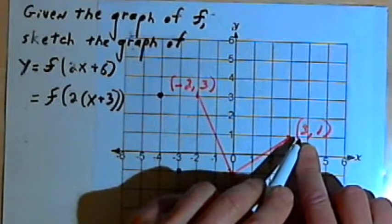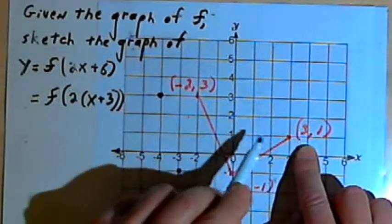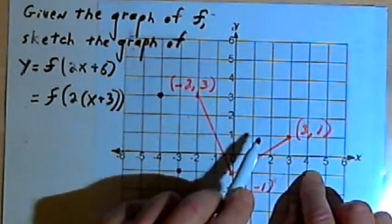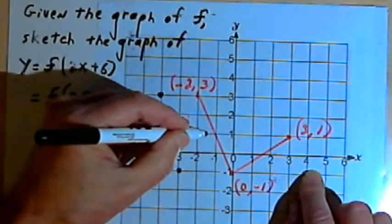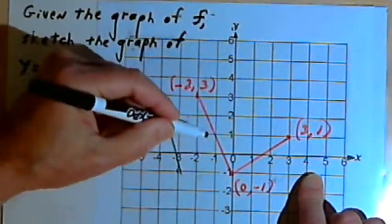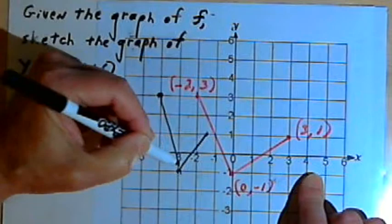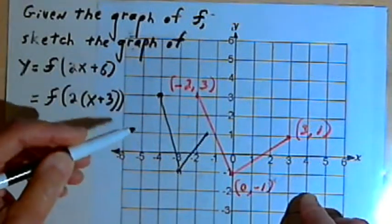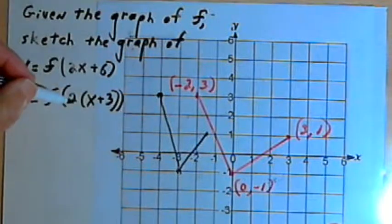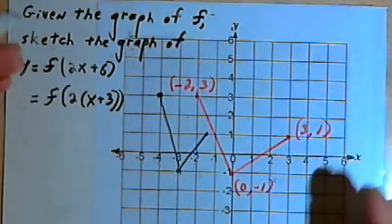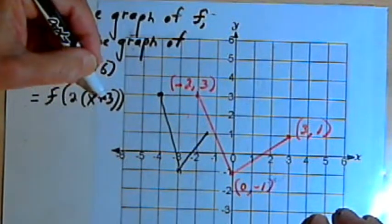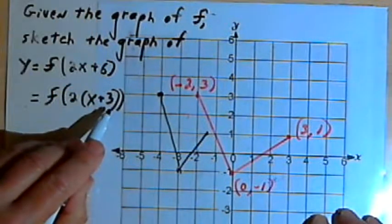And the last point I have is (3,1). I want to take that 3 and multiply it by 1 half, which is 1 and a half, and then subtract 3, which is going to become negative 1 and a half. And then I can connect those two points, and what I've got is a graph which has been compressed, that's what this 2 did, it made it half as wide, and then it's been shifted over 3 units to the left. That's what the 3 did.